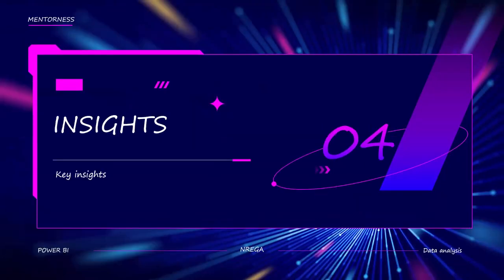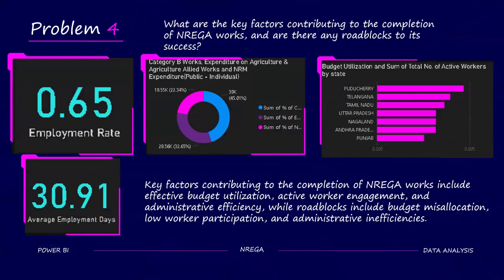Now we are going to see what key insights we gained. Problem 4 was to see what key factors contribute to the completion of NREGA works and are there any roadblocks to its success. You can see that there is a 65% employment rate and average employment days were 31. The key factors contributing to the completion of NREGA works include effective budget utilization, active worker engagement, and administrative efficiency, while roadblocks include budget misallocation, low worker participation, and administrative inefficiencies.